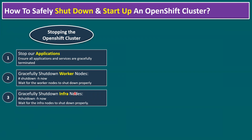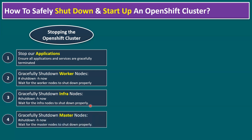The third step is to gracefully shut down infra nodes. In our lab environment we do not have infra nodes, but in some production environments there are infrastructure nodes — also called storage nodes. If you have storage nodes included within your OpenShift cluster environment, you have to shut them down as well. From the command line, use the same shutdown command. If you have multiple infrastructure nodes, wait for all of them to shut down properly.